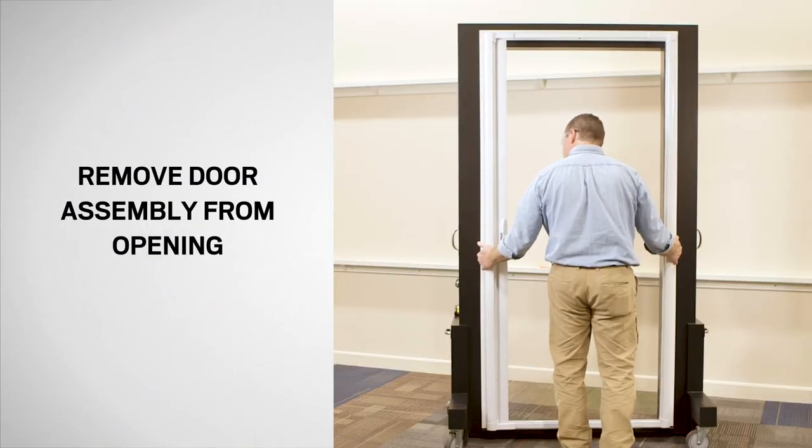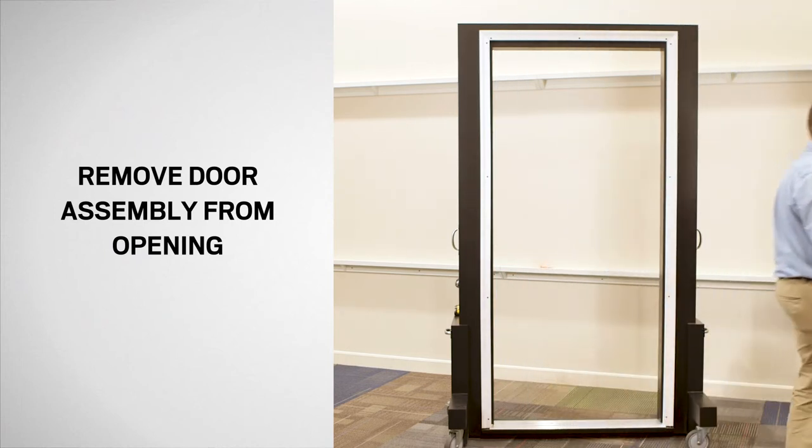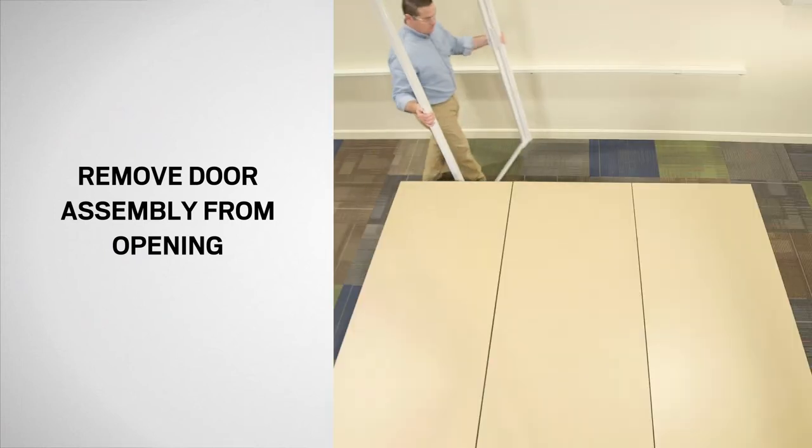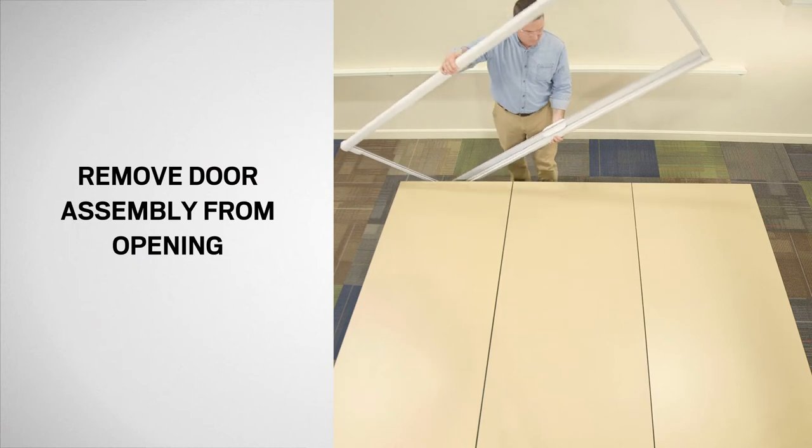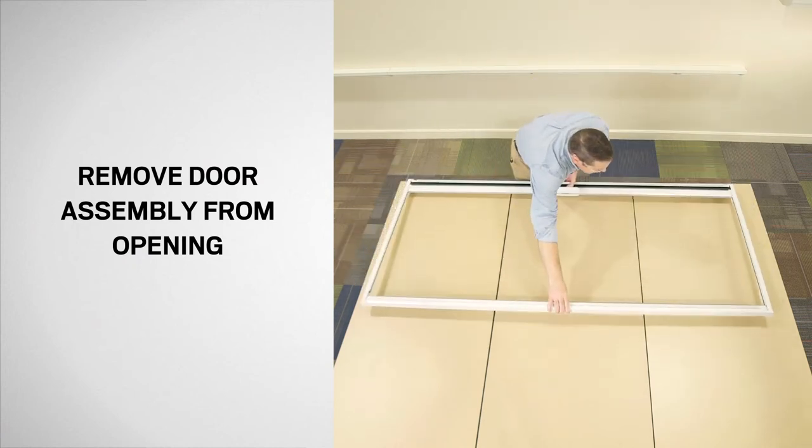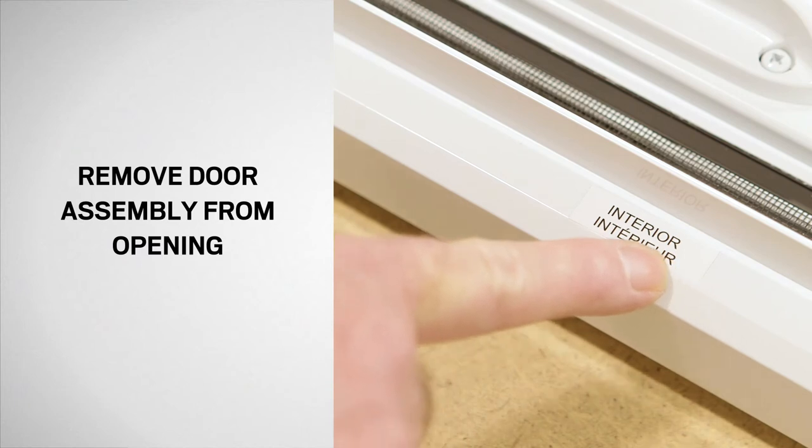Now, remove the screen door assembly and lay it flat on a non-abrasive surface such as carpet, a drop cloth placed on your lawn, cardboard, or a work table with the interior side facing up.